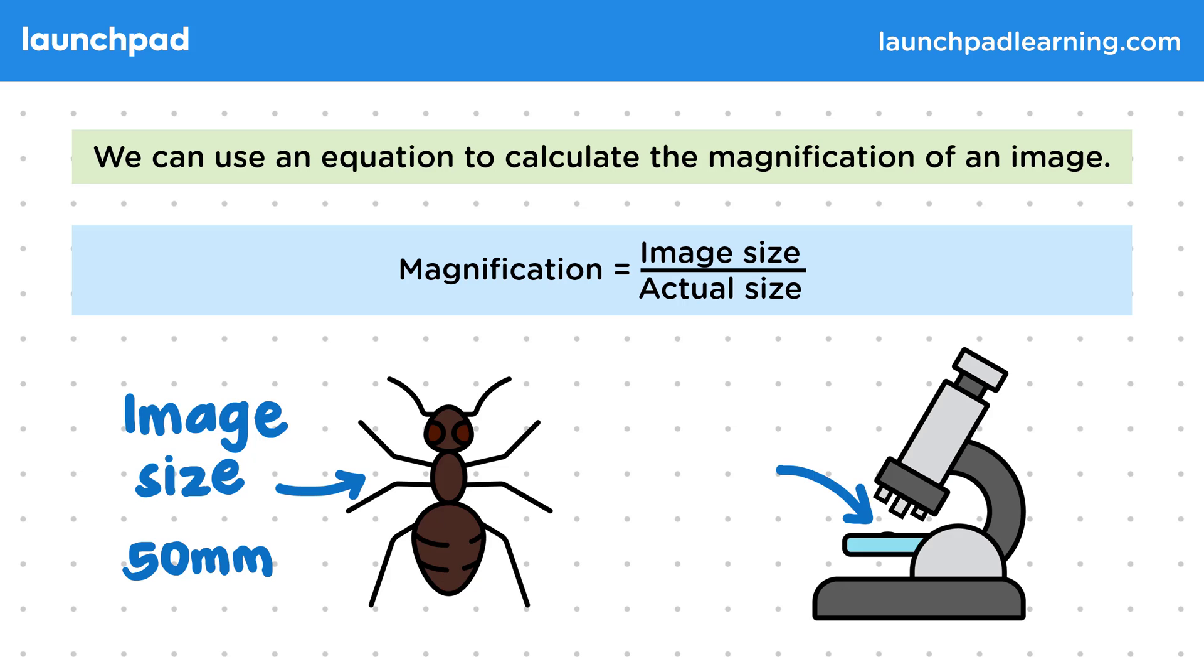This isn't the actual size of the ant. The actual size when placed underneath the microscope is actually 5 millimetres. The image size is larger because it has been magnified. You don't need to know the exact lengths 5 millimetres and 50 millimetres for the exam. This is just an example.